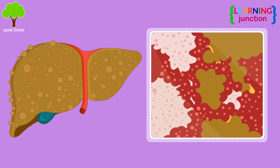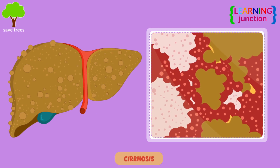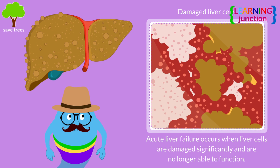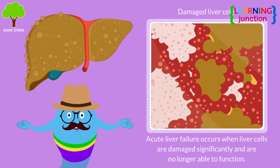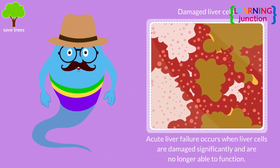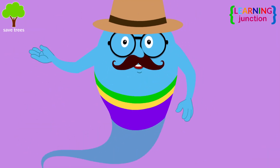Over time, liver disorder can result in cirrhosis. It's a type of liver damage where healthy cells are replaced by scar tissue and the liver can no longer function properly.